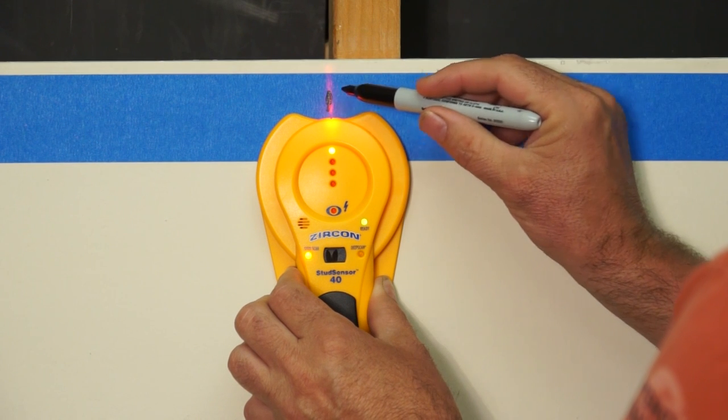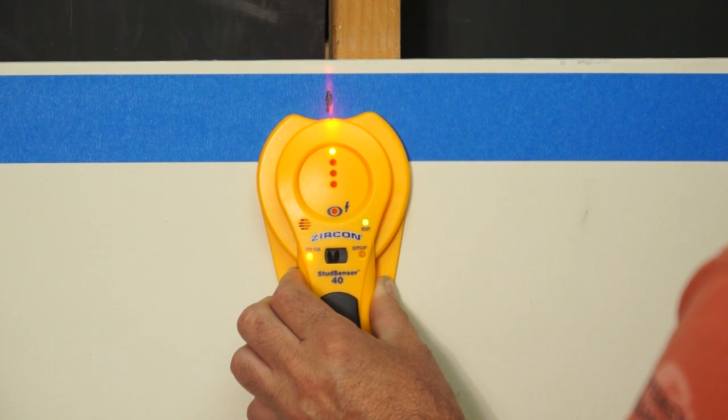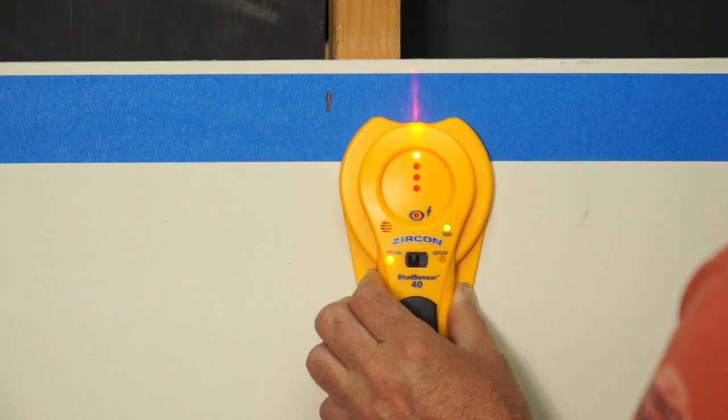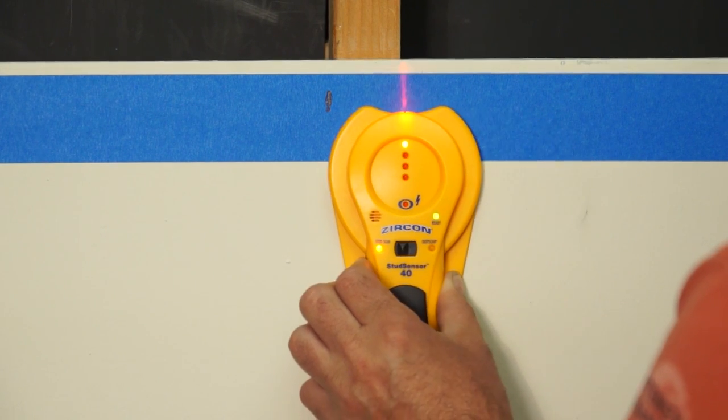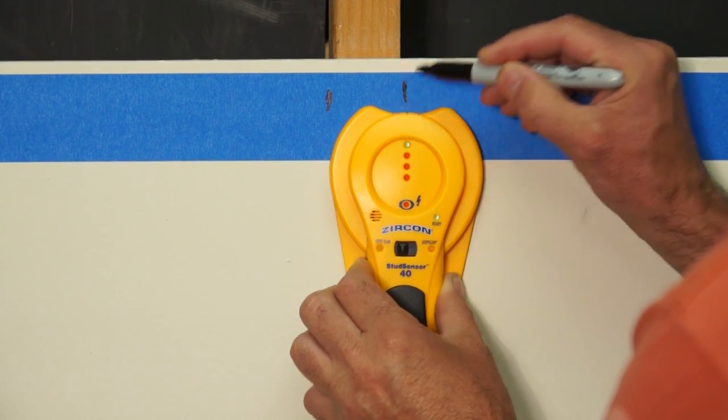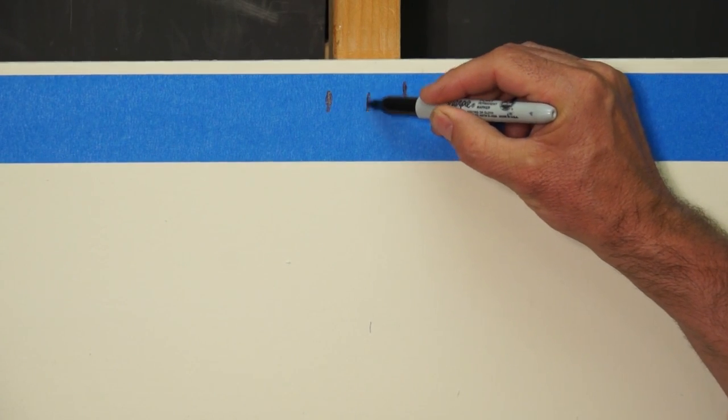Now remember, we don't want to put a screw there. That's only one edge. We want to continue past the stud and then reverse directions, and then mark the other edge of the stud, and the center of the stud is halfway between the two edges.